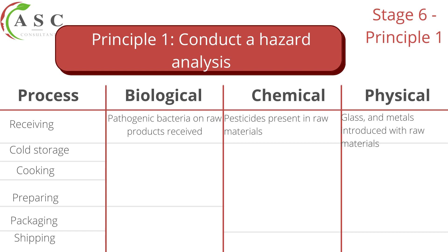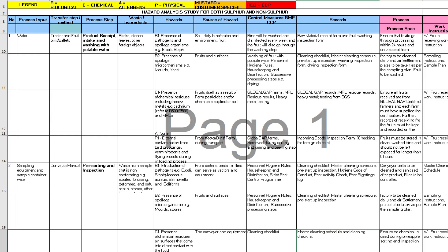It's also very important to determine how you are going to control those hazards. Looking at this example of a hazard analysis on the slide, column two shows the process input — what goes into the process — and column three shows the transfer method, indicating how the product moves from one step to another. The process step column lists the actual processes your product goes through.